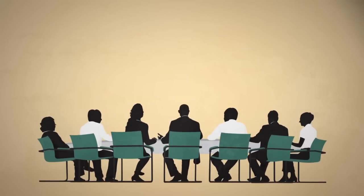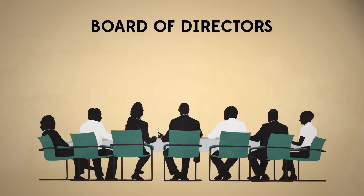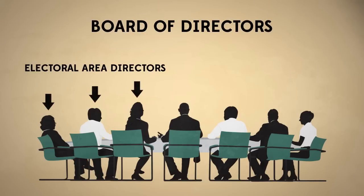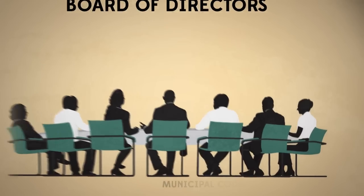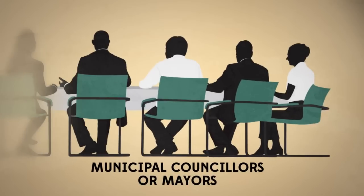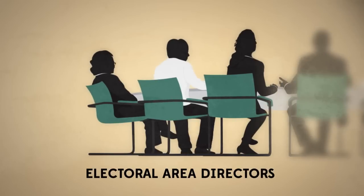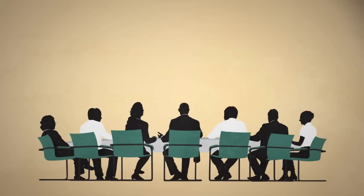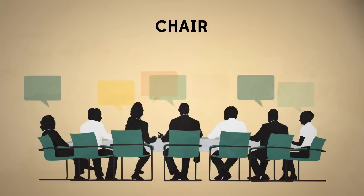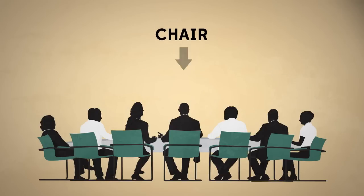Each regional district is governed by a board of directors, which is made up of municipal directors and electoral area directors. Municipal directors are municipal councillors or mayors, usually appointed by their local municipal councils. Electoral area directors are directly elected by voters in unincorporated parts of the province. The head of a regional district board of directors is called the chair, chosen by a vote of the members of the board.